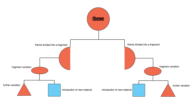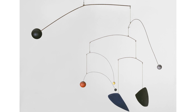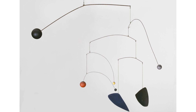In this diagram, a theme is stated, then divided in half, with each half subject to variation, which is then integrated into new material which itself is varied throughout. There is no coincidence that this begins to resemble a Calder mobile.